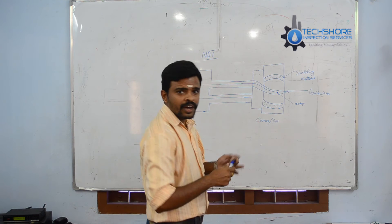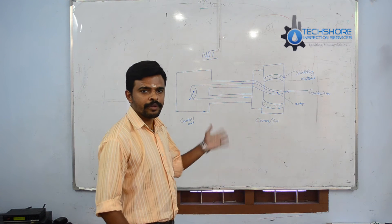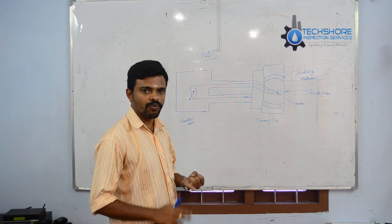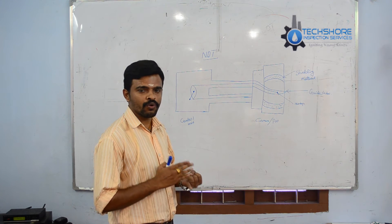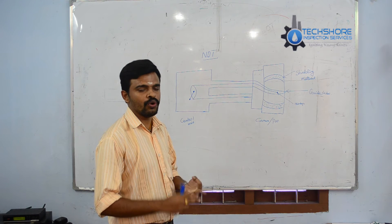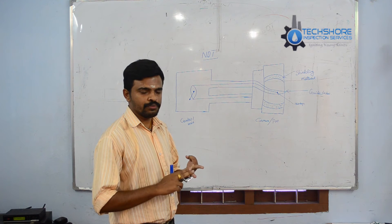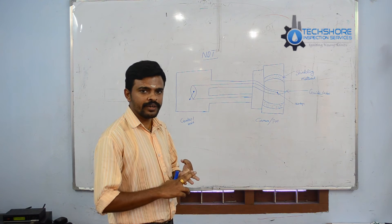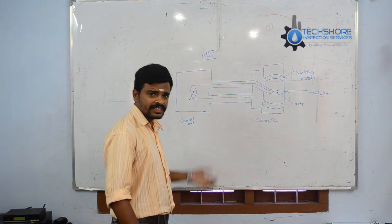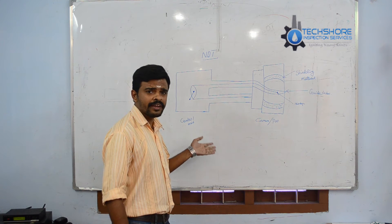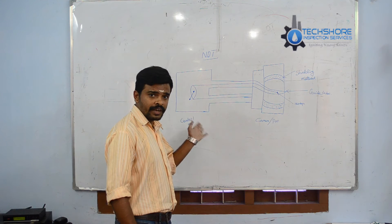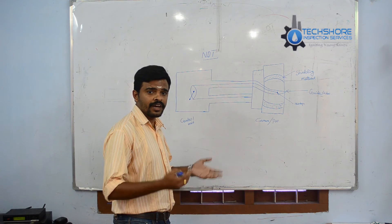The RT machine is mainly divided into three parts: the first one is the camera or port, the second one is the guide tube, and the third one is the control unit. These are the three main parts of the RT machine.